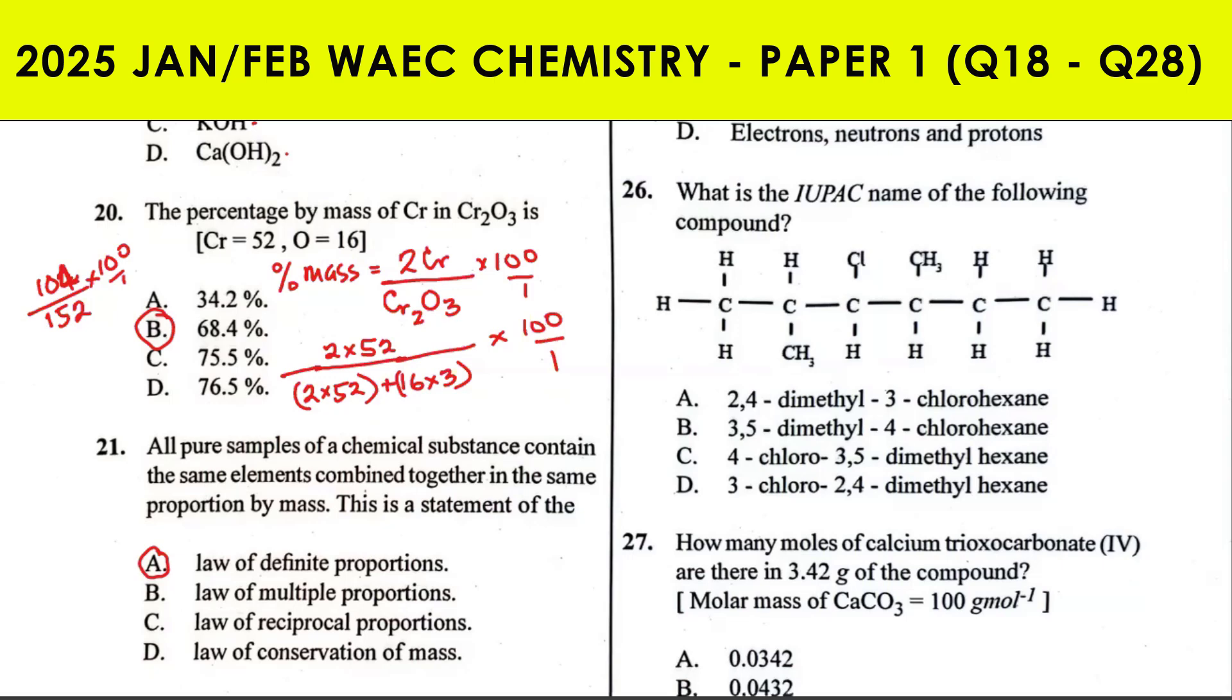What does that mean? If you get samples of a particular compound from different sources, provided they are pure, they will contain the same elements combining in the same ratio by mass. Example: you get water from tap, get rain water, get spring water. Provided they are all pure, if you carry out analysis of these sources of water, you find out that they contain hydrogen and oxygen in ratio 2 to 1.